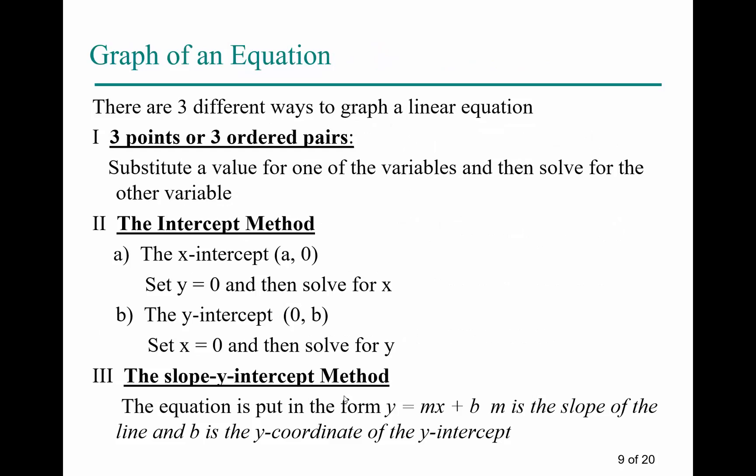There are three ways to graph a linear equation. The first uses three ordered pairs — in reality only two points are needed to make a line, but the third serves as a checking point to confirm the first two are correct and no arithmetic error was made.